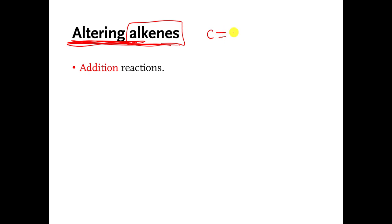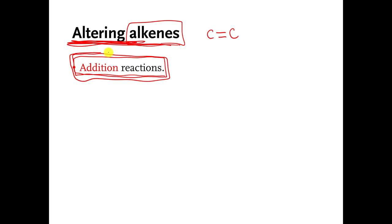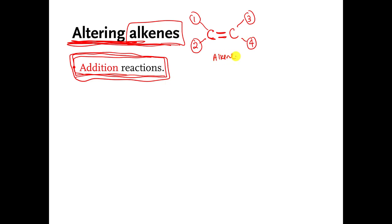If you remember, a molecule with an alkene functional group is a molecule that has two carbons double bonded to each other. Let's just pretend that there's something in spot number one and spot number two on the carbon on the left, and something in position number three and position number four on the carbon on the right. This is just a generic molecule with an alkene functional group.